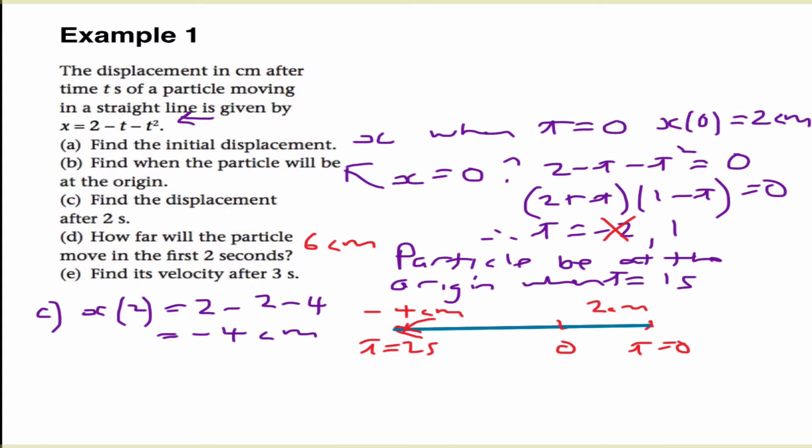And Part E asks us to find the velocity of that function after 3 seconds. So in this case, we're looking at x is equal to 2 minus t minus t squared. So to find the velocity, obviously, we need to differentiate that. And we get minus 1 minus 2t. And we want to find x dash when t is equal to 3. So substituting 3 into that, we get negative 7. And it will be centimeters per second. So that's a very straightforward application of calculus to a kinematics problem.